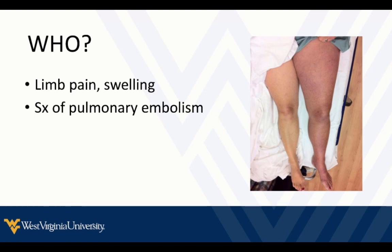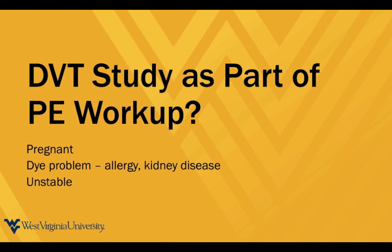Any patient with limb pain or swelling is a candidate, and in some scenarios patients with signs or symptoms of pulmonary embolism as well. DVT study can be part of a PE workup — and in certain situations it can answer your questions without pulmonary arterial imaging. Those patients include pregnant patients, patients with IV contrast allergy or significant kidney disease, or patients too unstable to go for a CT pulmonary angiogram. That's where this adds useful information to the clinical scenario.